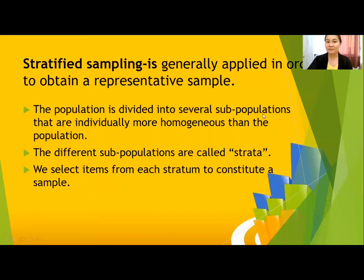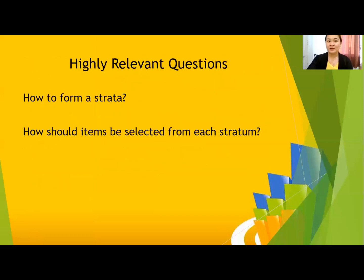Stratified sampling is generally applied in order to obtain a representative sample. The population is divided into several subpopulations that are individually more homogeneous than the total population. These divisions are called strata. Then we select items from each stratum to constitute a sample — so how to form the strata and how items should be selected from each stratum.